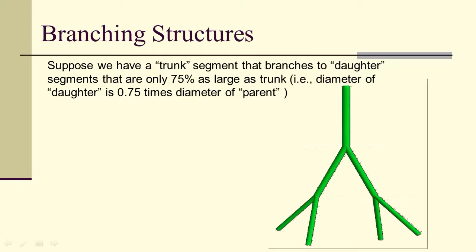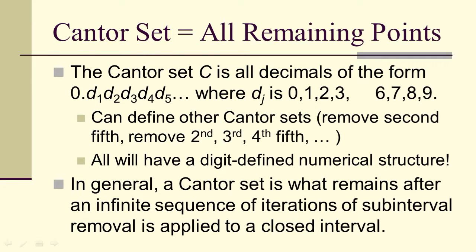In general, a Cantor set is what we call what remains after an infinite sequence of iterations of subinterval removals applied to a closed interval. We can also get fractals using branching structures. Notice that once again we're getting scale. By the way, the scale with the Cantor set here is that we have no 4s and 5s for every decimal place. That means at every level, at every scale, at the one tenth, the one hundredth, the one thousandth, the one billionth, the one trillionth, whatever, we have a repetition of a pattern at every single scale.